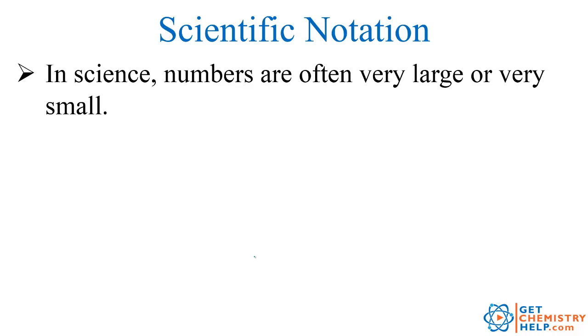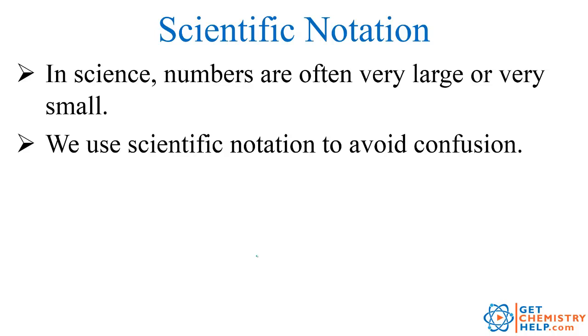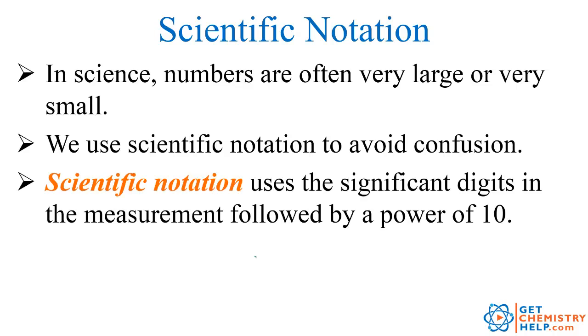In science, oftentimes our numbers can be really large or really small. So to avoid confusion with all of the zeros, we're going to use scientific notation. Basically, we're going to write just the significant digits, and then follow those up with the power of 10. This is called the coefficient, and then it's multiplied by a base. In our case, the base is 10. So in scientific notation, we're always using base 10.